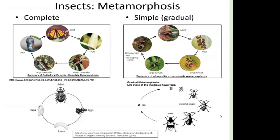The caterpillar develops through what are known as instars — it starts off small, sheds its cuticle, and develops into a larger caterpillar. The larger it gets, the more damage it can cause. After a period of feeding, it will weave a silk cocoon — some use soil, some use plant debris — where it hibernates and changes to the adult. That is what is referred to as complete metamorphosis.